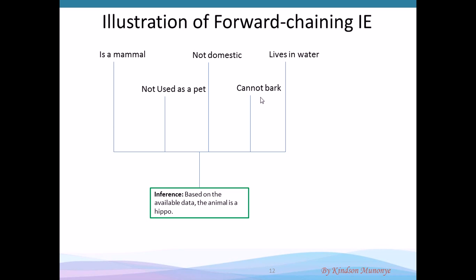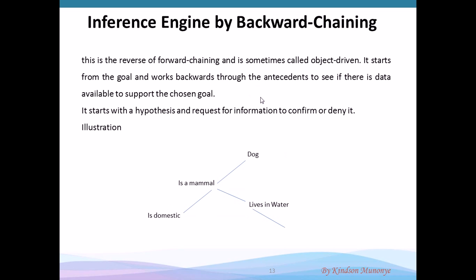The backward chaining inference engine is the opposite. It starts with the object — it takes a blind guess — for example, it's a dog. Then it is a mammal? Yes. Does it live on land? Yes. Is it domestic? Yes. Is it used as a pet? Yes. Then the guess is confirmed: it is a dog. That is how backward chaining works. It makes a guess and starts gathering data to either confirm or deny. If the data shows it lives in water, the inference would be it is not a dog, and then it starts over or goes in another direction.